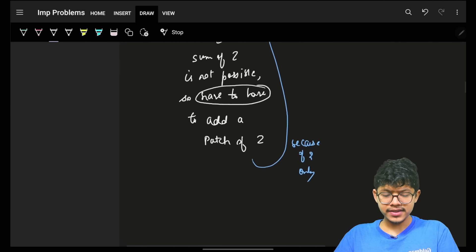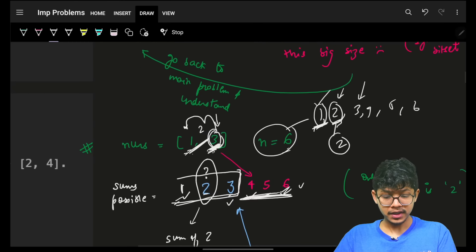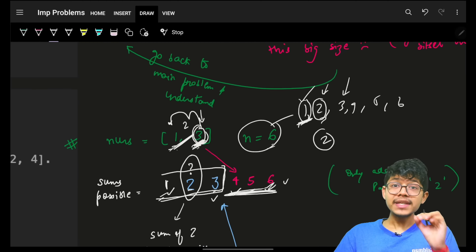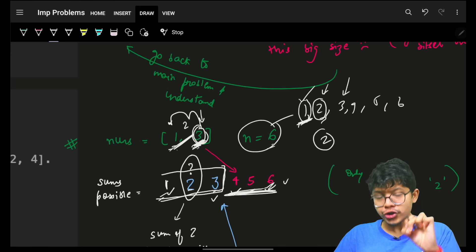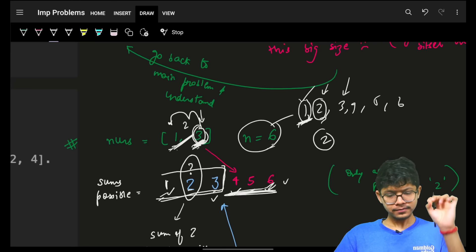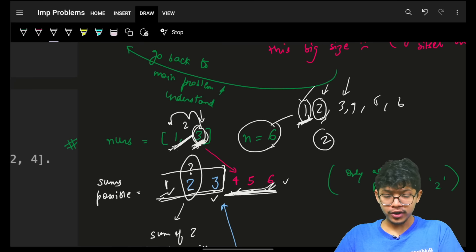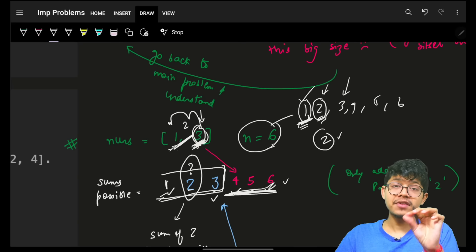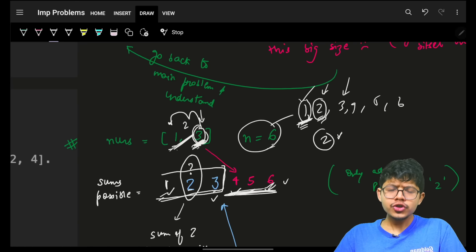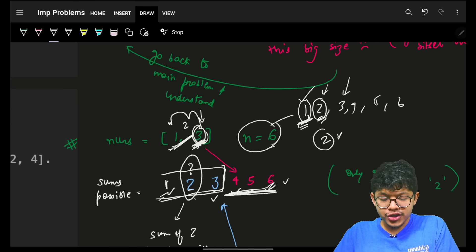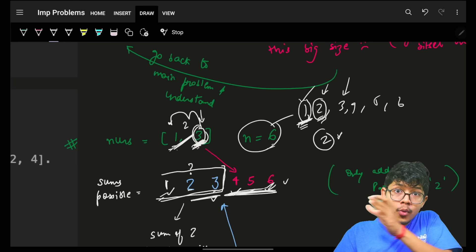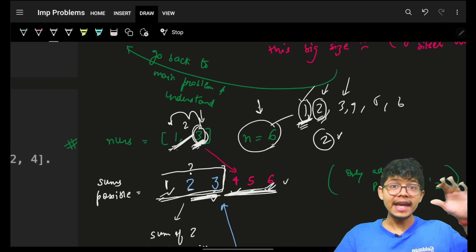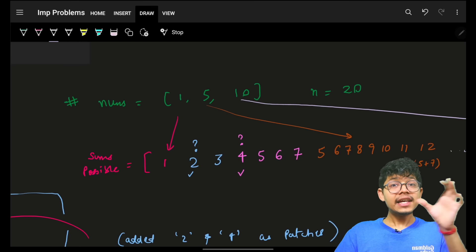From this example, the first thing you learn is: when something is missing, you for sure have to add a patch for it. To add that patch, you have multiple options — add a smaller number or the exact missing number. I chose to add the higher number so that I could build more sums and reach n faster.